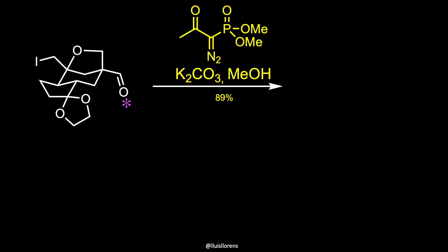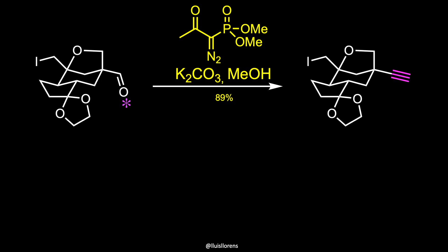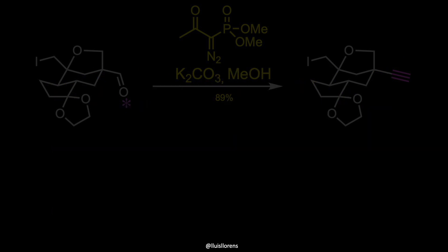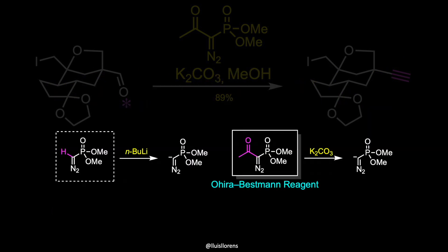The aldehyde was then subjected to the Bestmann modification of the Seyferth–Gilbert homologation to give a terminal alkyne. The Seyferth–Gilbert homologation allows the conversion of carbonyl compounds to the corresponding terminal or internal alkynes with the aid of alpha-diazophosphonates under basic conditions through the formation of an oxyphosphatene intermediate. The use of the Ohira–Bestmann reaction makes this procedure much more compatible with a wide variety of functional groups because it requires the use of much milder basic conditions.